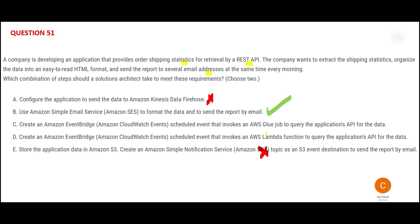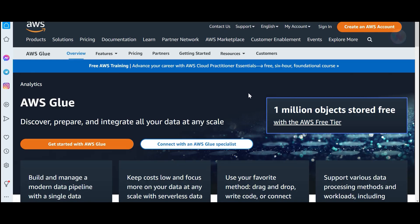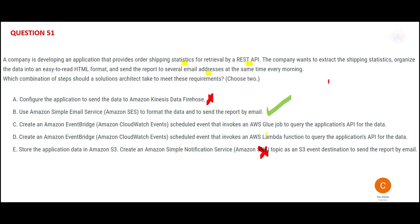We are left with two options, both using EventBridge. We need EventBridge because we have to organize and send the data — some sort of data processing to call the REST API. Using EventBridge we will schedule an event that invokes either a Glue job or a Lambda function. Glue is a primary ETL service — extraction, transformation, and loading — available from AWS. However, there is no need for Glue here because the same function can be executed through Lambda.